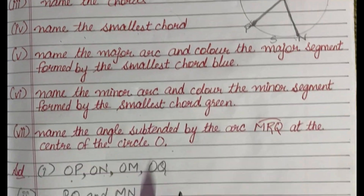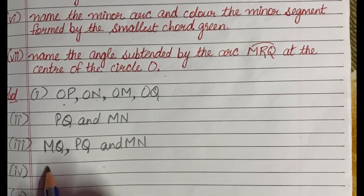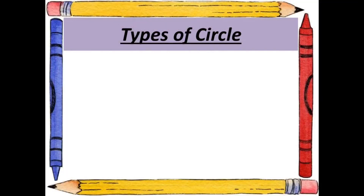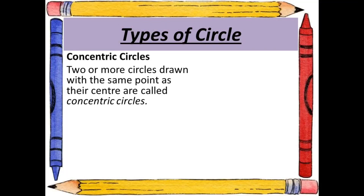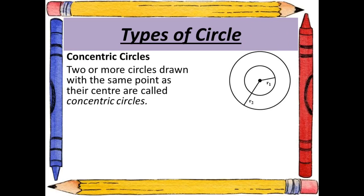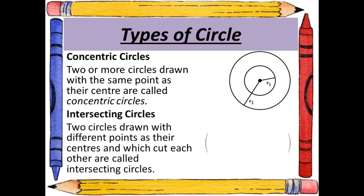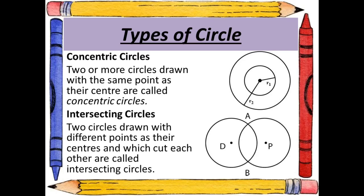The types of circles include concentric circles — two or more circles drawn with the same center point — and intersecting circles — two circles drawn with different centers that cut each other.